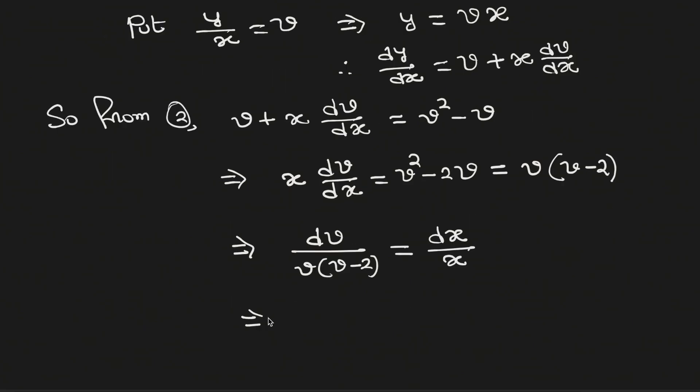The left hand side can be written as 1/2 times (1/(v-2) minus 1/v) dv equals dx/x.